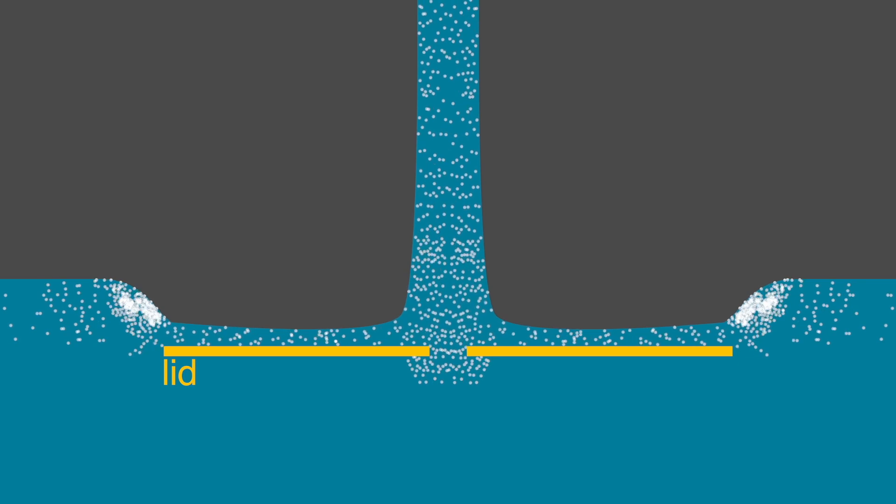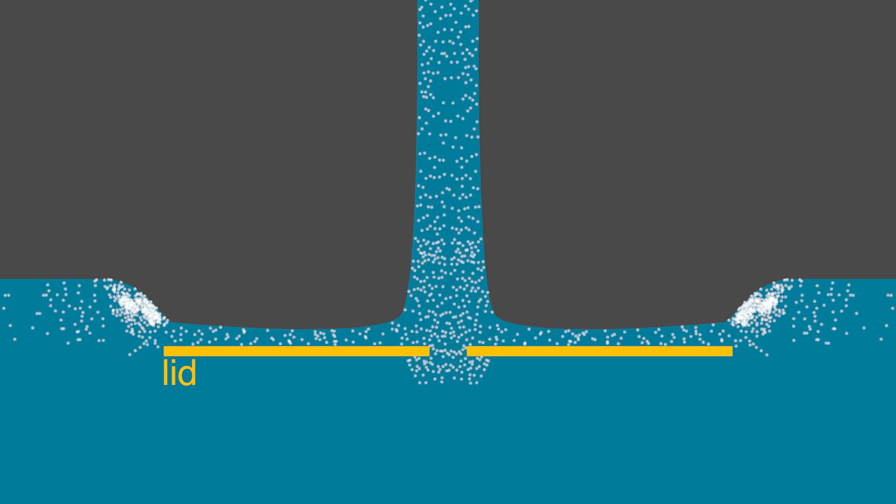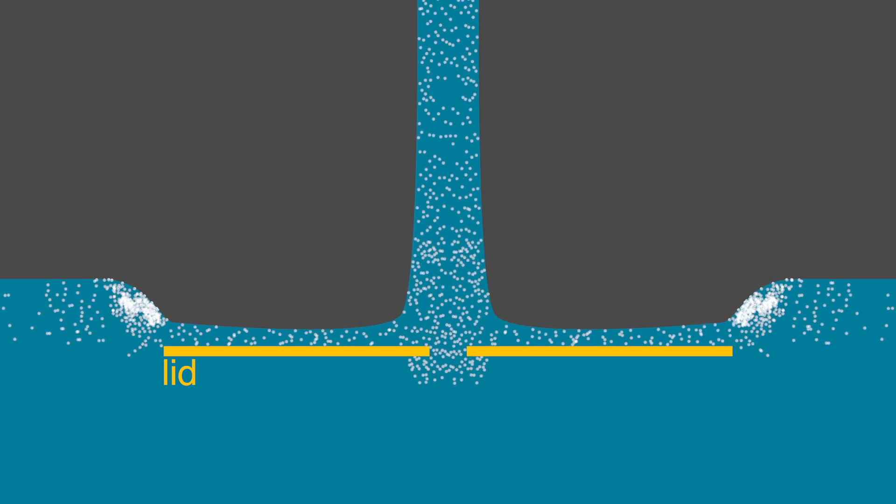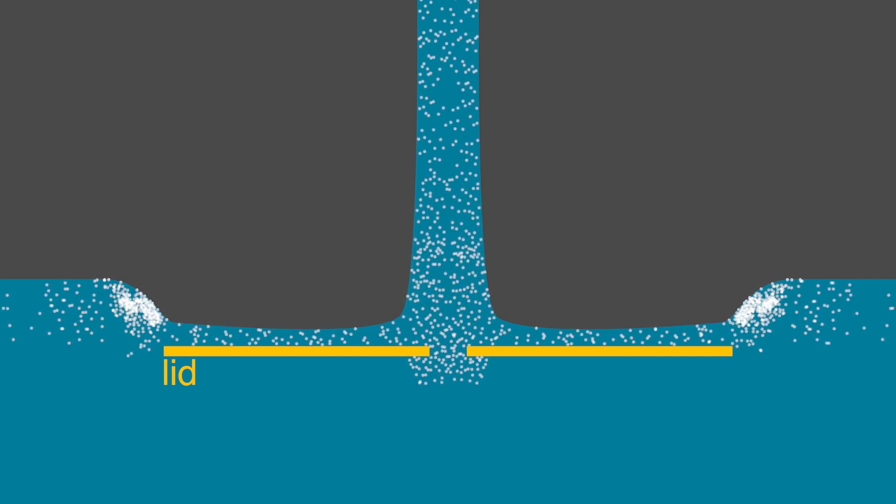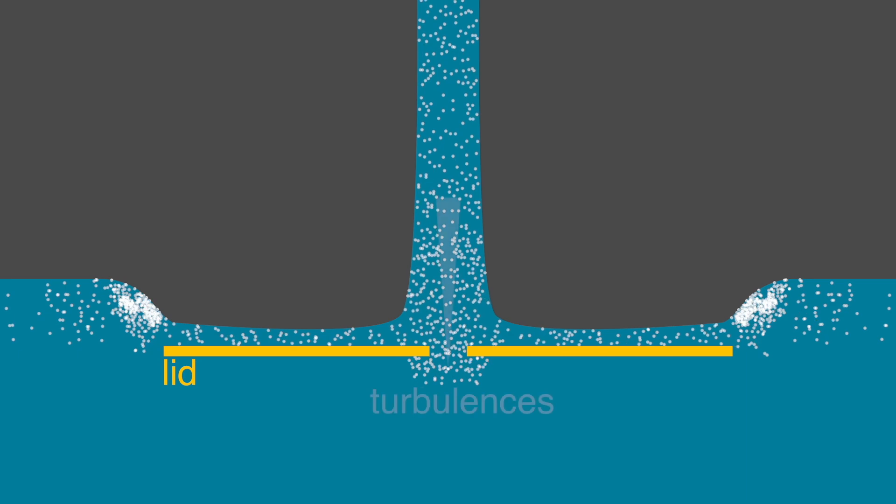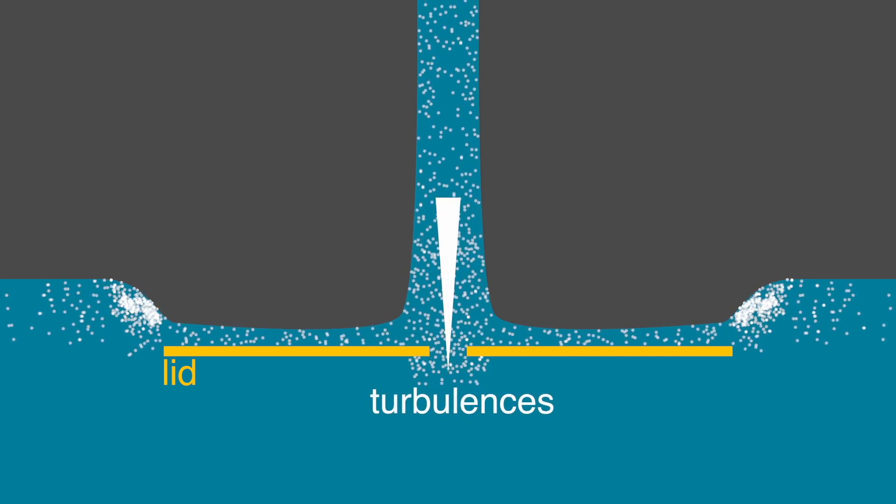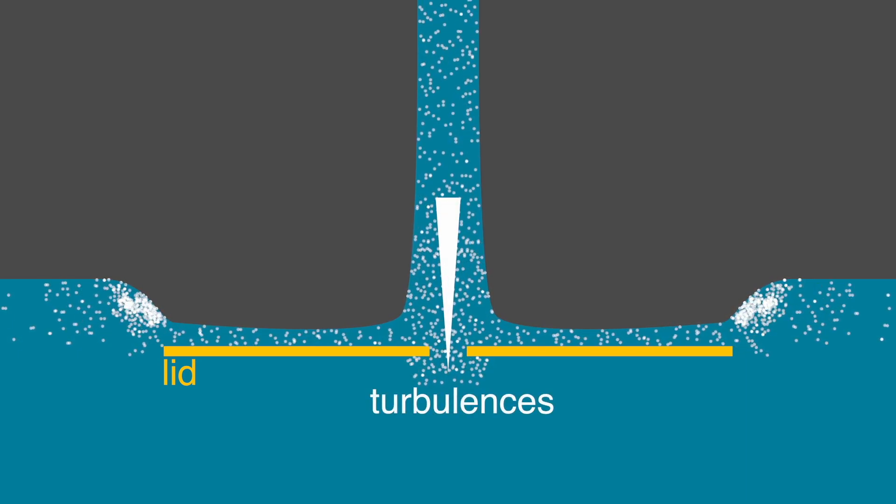But if you let a jet of water hit the lid, dynamic effects are added by the water flow. Part of the water jet flows through the hole of the metal lid into the water and creates turbulence there, which pulls the hole of the lid into the middle of the water jet.